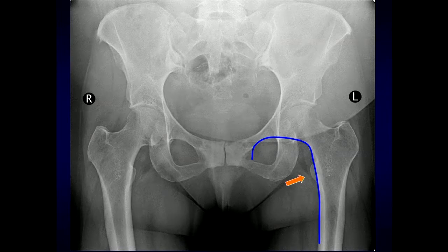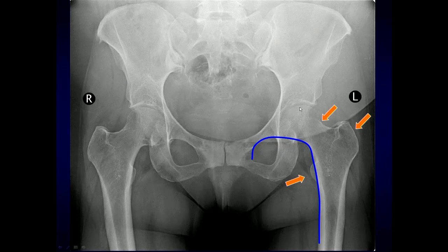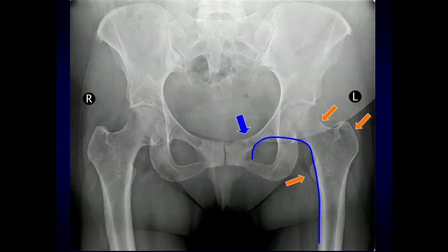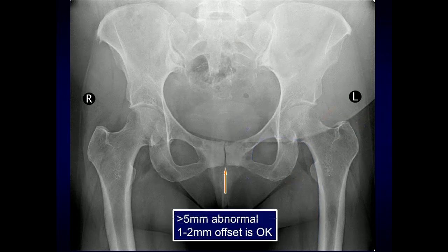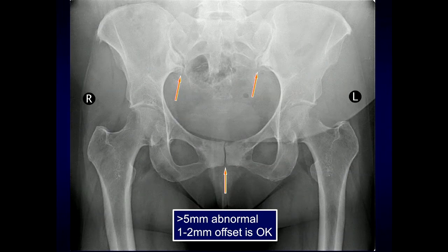You want to look at the lesser trochanter and the greater trochanter, which helps you to find intertrochanteric fractures, as well as draw a line around the femoral head and along the femoral neck to assess for fractures in this region. Additionally, take a close look at the superior as well as the inferior pubic rami. The pubic symphysis can have up to 1-2 mm of offset and that is okay; if it's greater than 5 mm wide, that's abnormal. You can also look at the congruity of the sacroiliac joints, comparing right to left, looking for any widening.